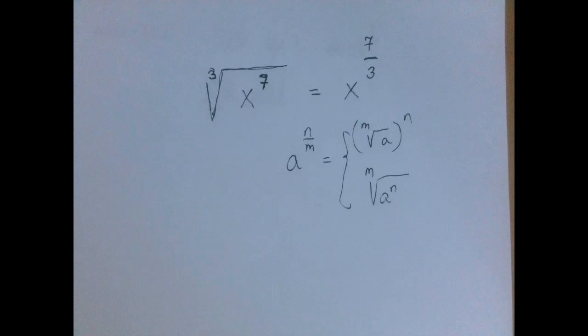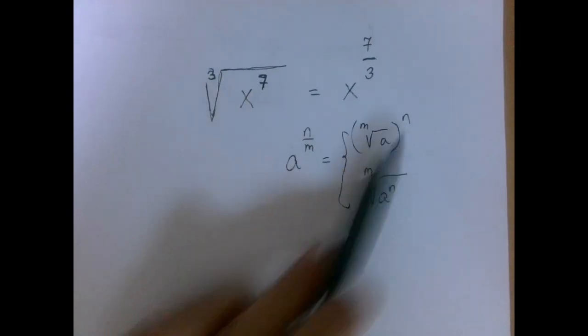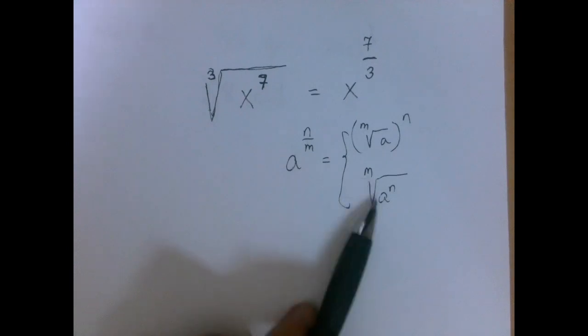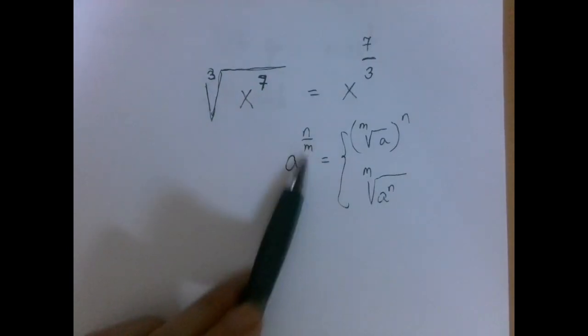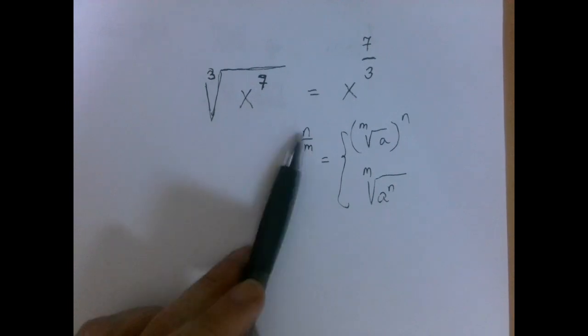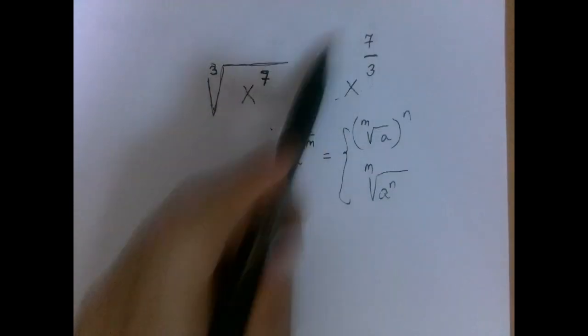So basically there is a commutativity here. First we take the root and then we exponentiate, or first we exponentiate then we take the root. But either way, the number downstairs is the number of roots taken, the number upstairs is how we climb up with values which is exponentiation. So this is our answer in this case.